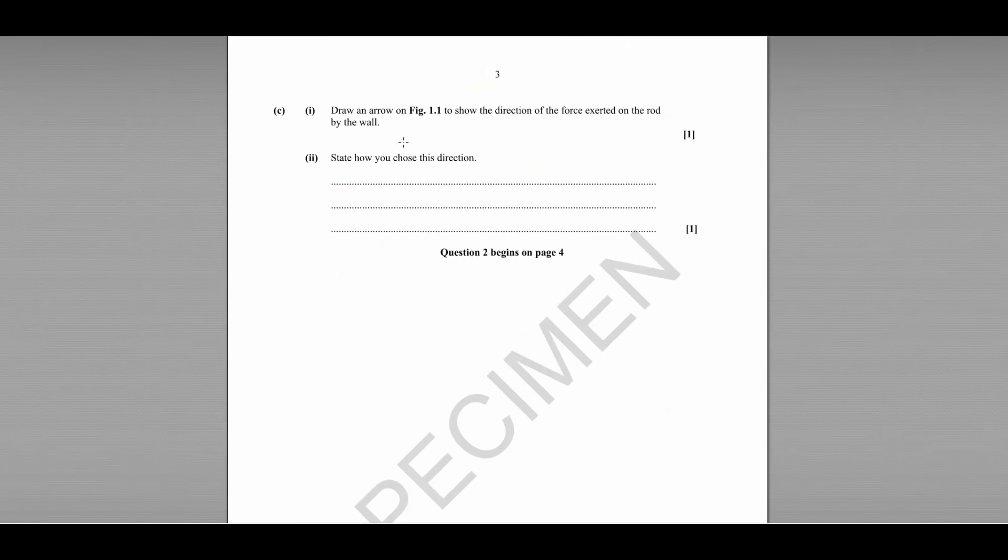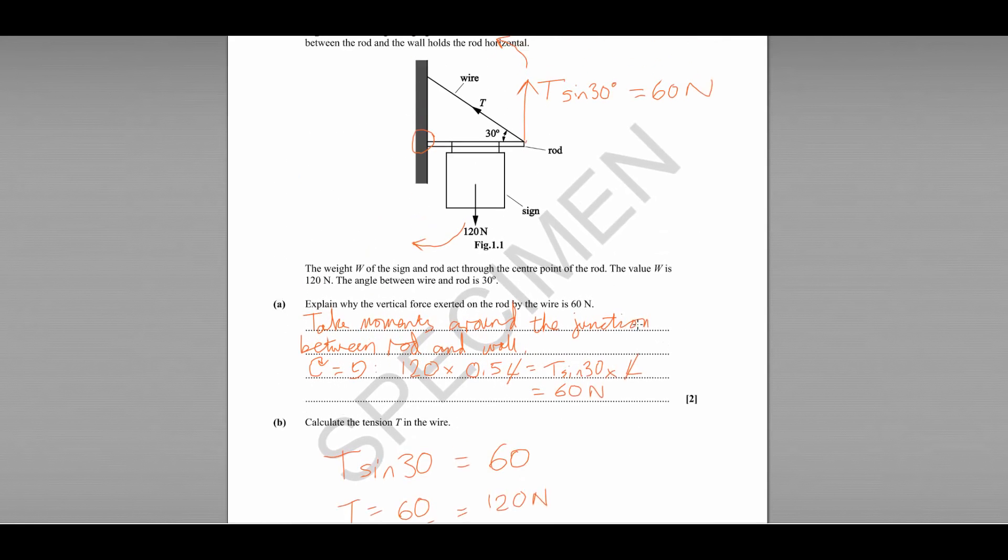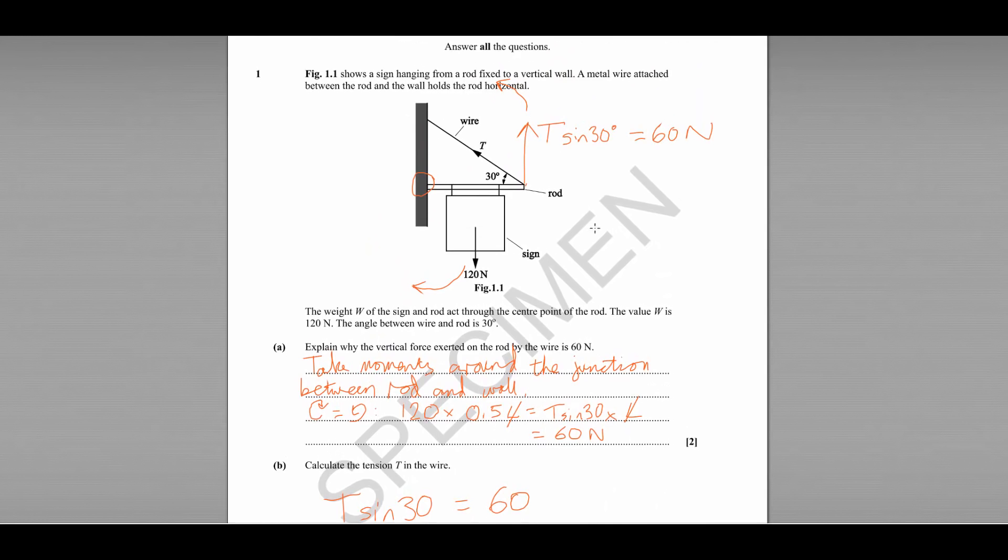Part CI asks us to draw an arrow on figure 1.1 to show the direction of the force exerted on the rod by the wall. If we look back at our diagram here we can see that the forces here are not balanced. We've got one force acting diagonally upwards and to the left, we've got one force acting down, which means that if we were to draw a triangle of forces we'd start by picking any of the forces. So in this case 120 newtons for the weight.